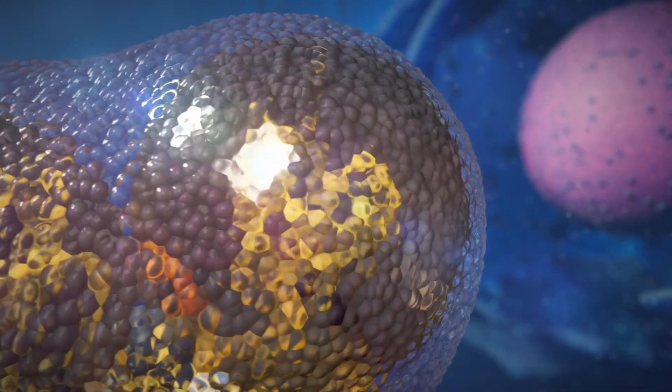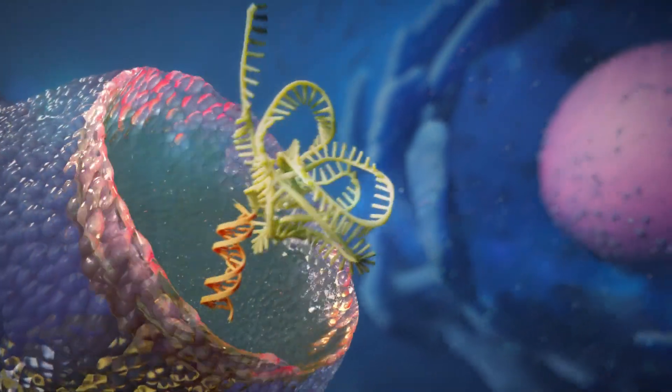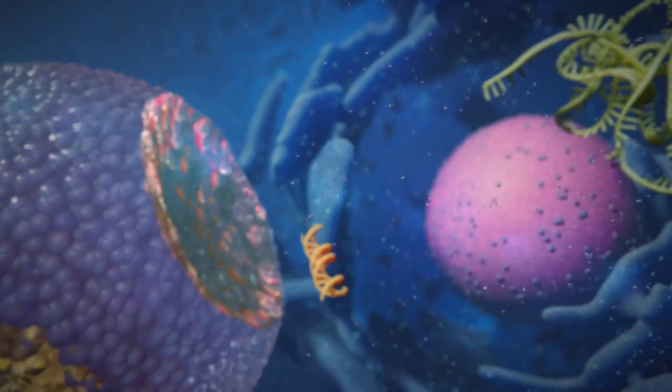The harsh environment inside the endosome destroys the lipid envelope, releasing the vaccine's life-saving mRNA and any fragments of foreign DNA.